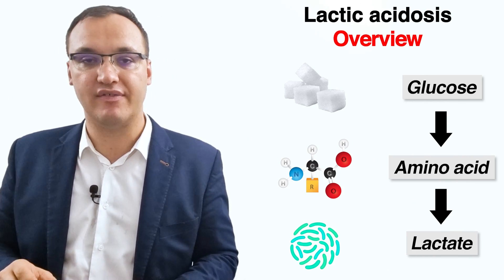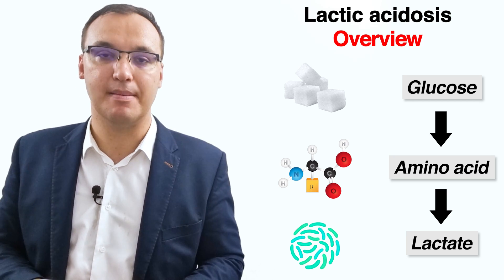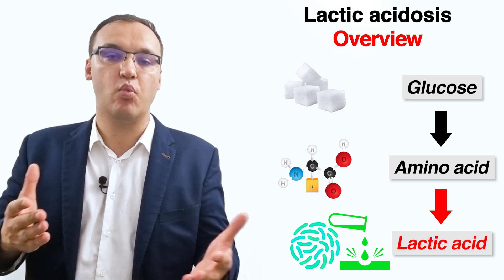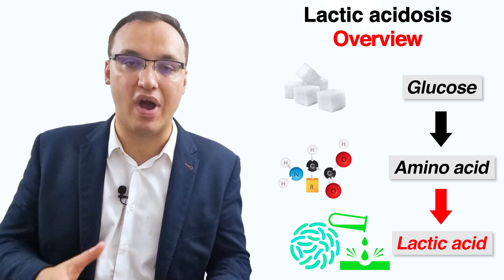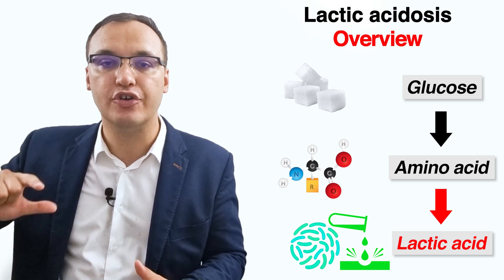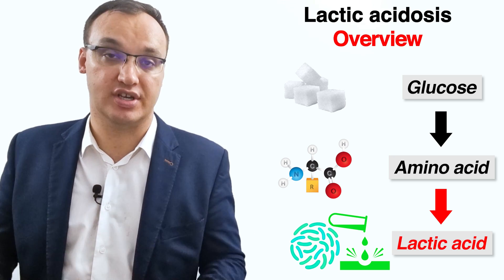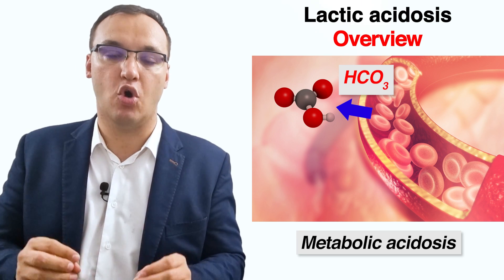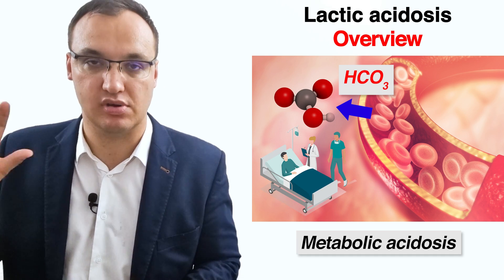In the first scenario, we have lactate — a normal byproduct of glucose and amino acid metabolism — that will accumulate as lactic acid. Lactic acidosis is a form of metabolic acidosis that arises when a person produces too much or underutilizes lactic acid without the body being able to adjust. Interestingly, lactic acidosis is the most common cause of metabolic acidosis, and this is the most common cause in hospitalized patients.